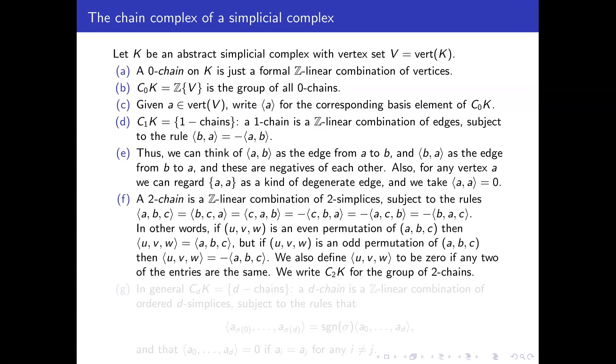So that was the 1-chains. And then now we want to talk about 2-chains. So we have a 2-chain pointy ⟨a,b,c⟩ for every 2-simplex with vertices a, b, c. But again, we have this kind of sign rule. So we could write the same simplex in various different orders, six different orders in which we could write the three vertices of the simplex.